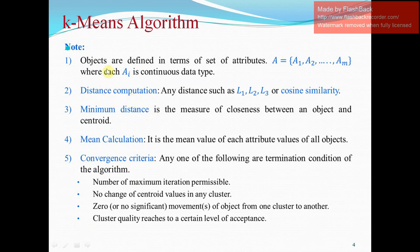Now, K-means algorithm takes attributes set A which contains elements from A1 to AM where each AI is continuous data type. Distance computation is any distance such as L1, L2, L3 or cosine similarity. Minimum distance is the measure of closeness between an object and the centroid. Mean calculation is made using the mean value of each attribute value of all objects. Convergence criteria says that following are the termination conditions of the algorithm. First is number of maximum iterations possible, no change of centroid value. Third is zero or no significant movement of objects from one cluster to another. Cluster quality reaches to a certain level of acceptance.